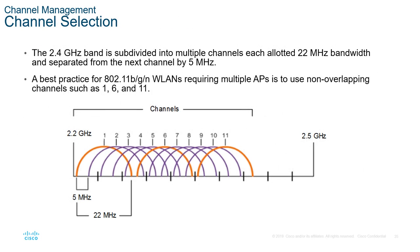In the U.S., the 2.4 GHz band has 11 basic channels, each about 22 MHz wide, with overlap between neighboring channels. Three channels do not overlap: channels 1, 6, and 11. These are the primary channels that should be used because they don't interfere with each other. If your neighbor uses channel 1 and another uses channel 6, you should use channel 11 — and vice versa based on a site survey.